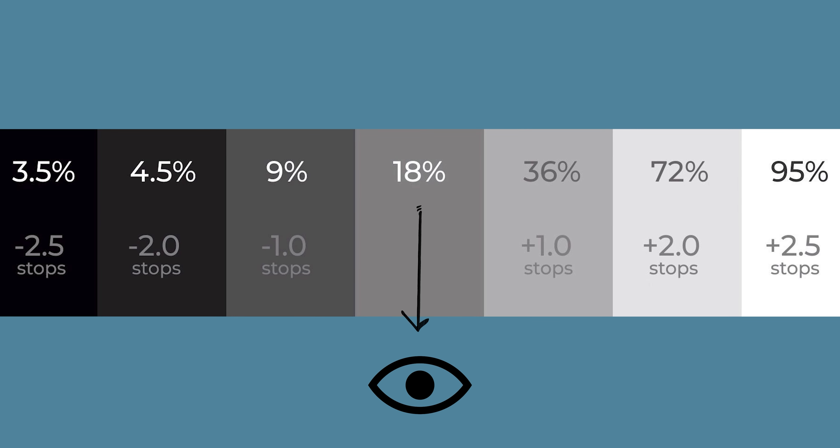When changing ISO levels, you are essentially changing the amount of light your camera detects as middle gray. Middle gray is basically just the midway point between black and white to the human eye. Middle gray reflects light back at about 18% and has been the one constant that photographers have based their exposure on and what modern cameras base their exposure levels on.